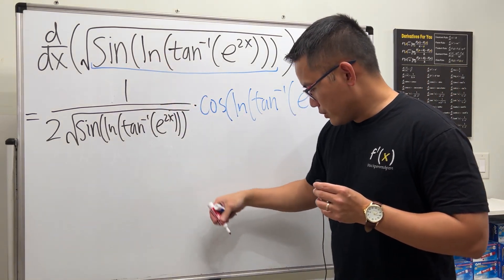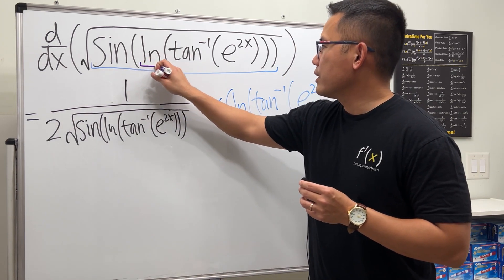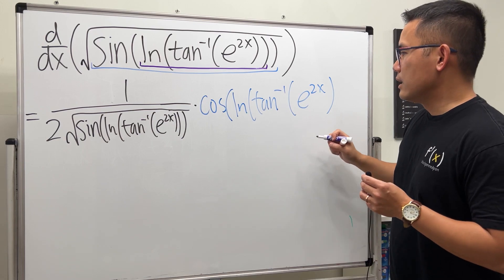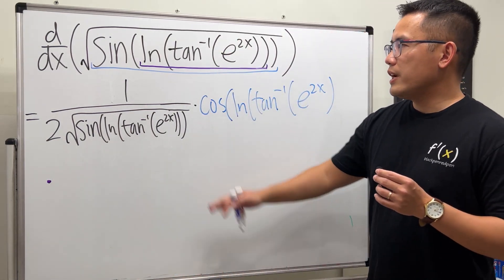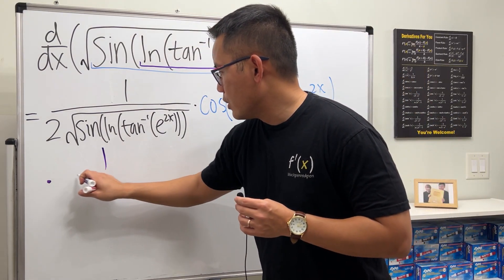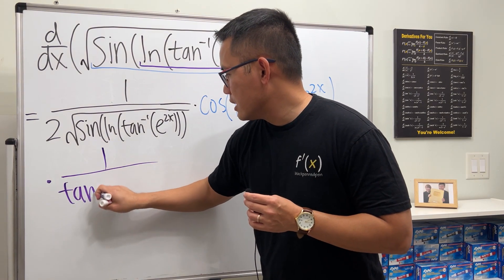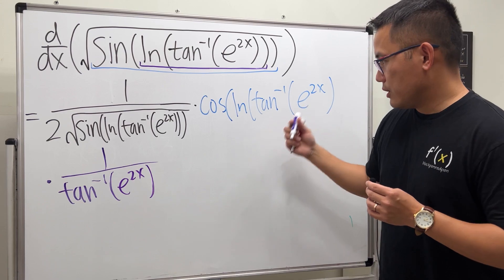Then the next one is we are going to differentiate the inner function right here. Like this. So it's a multiplication. So we multiply. When we differentiate ln of something, it's just 1 over. So we have 1 over the inside pretty much. So we have inverse tangent of e to the 2x. Like that.